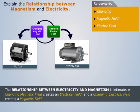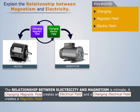The relationship between electricity and magnetism is intimate. A changing magnetic field creates an electrical field, and a changing electrical field creates a magnetic field.